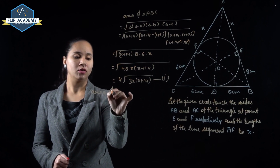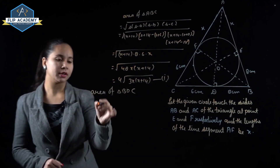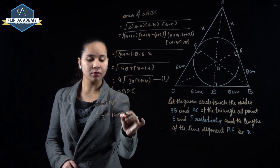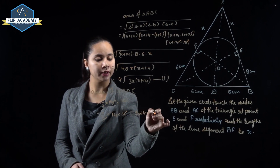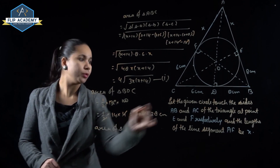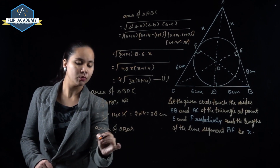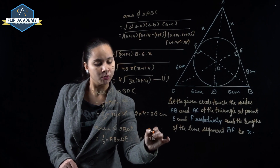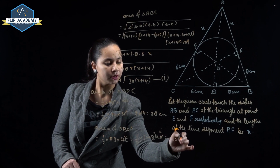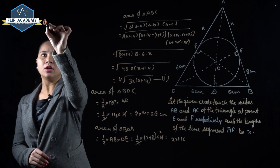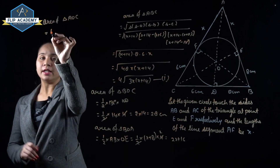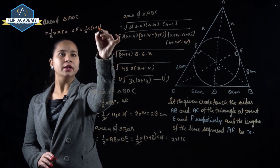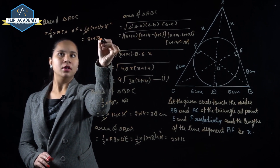The area of triangle BOC equals ½ × BC × OD = ½ × 14 × 4 = 28 cm². The area of triangle BOA equals ½ × AB × OE = ½ × (X+8) × 4 = 2X+16. The area of triangle AOC equals ½ × AC × OF = ½ × (X+6) × 4 = 2X+12.